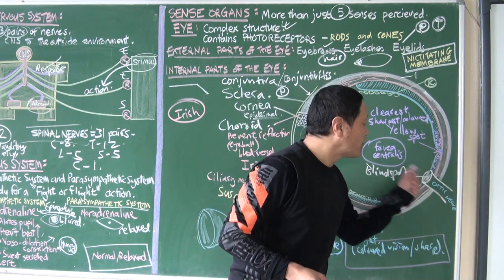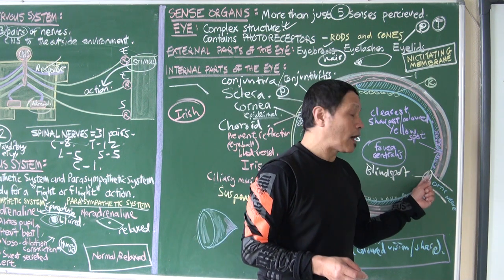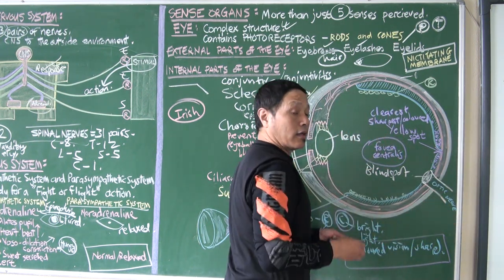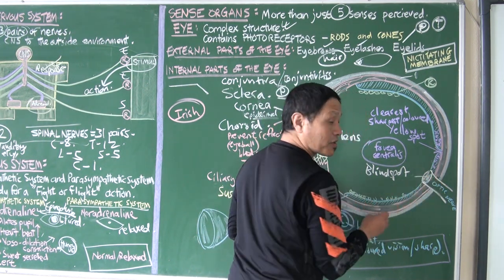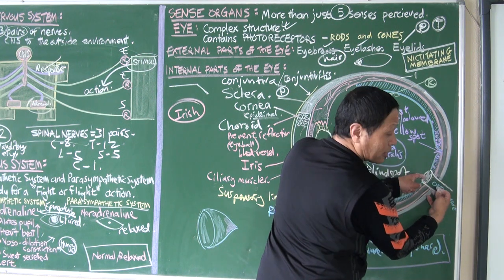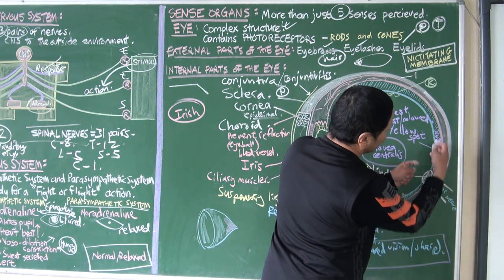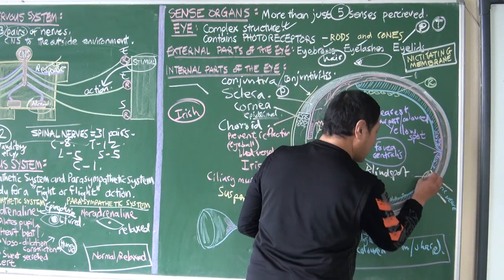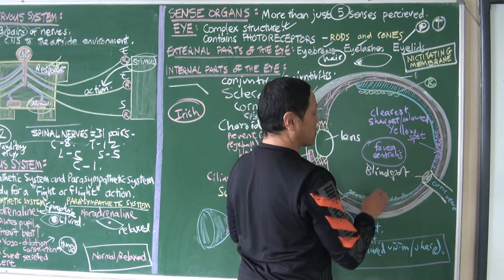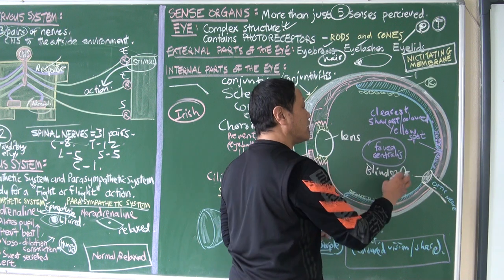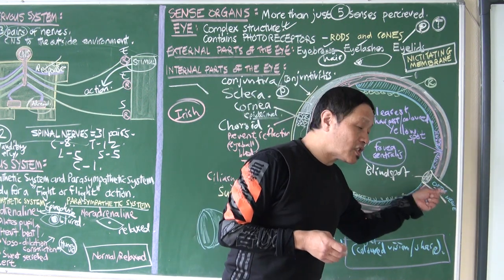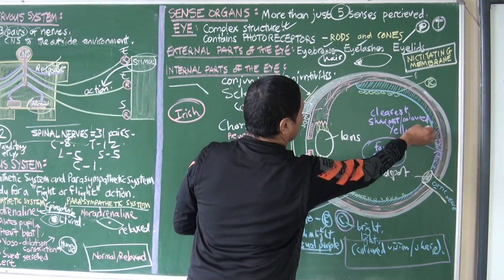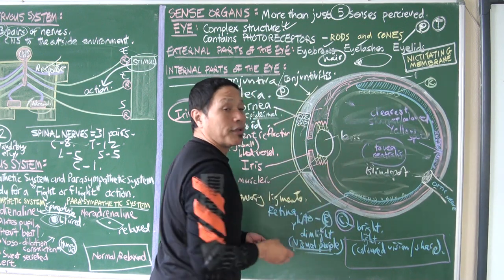Then we have another structure known as the blind spot. The blind spot is the spot where no vision occurs. This part is not capable of capturing images at all because this is the point where the optic nerve begins or originates. There are no photoreceptors here - all these photoreceptors come and they join the nerve endings of the optic nerve. This joining does not have any photoreceptors. So that is the part where no vision occurs - that's called the blind spot. From here the optic nerve takes the image to the brain. So it is the brain which actually sees the image.